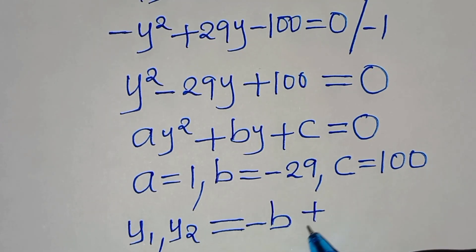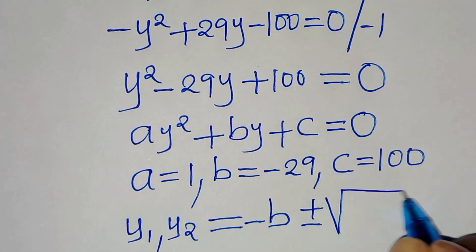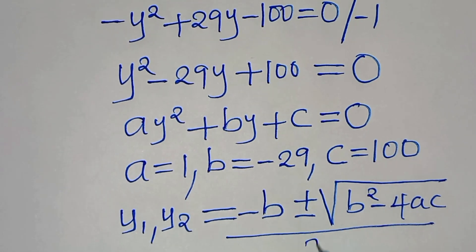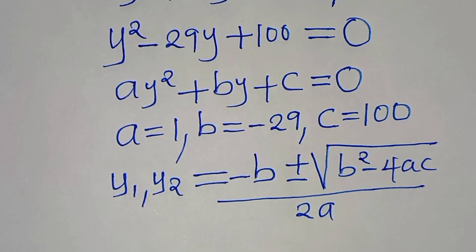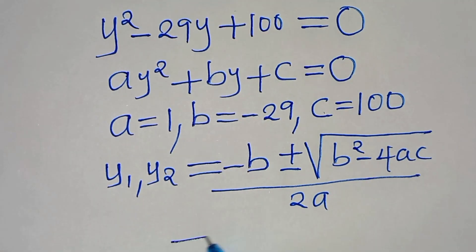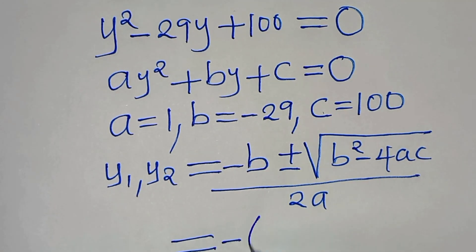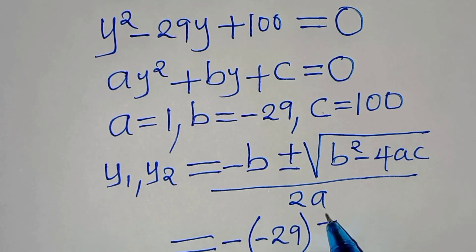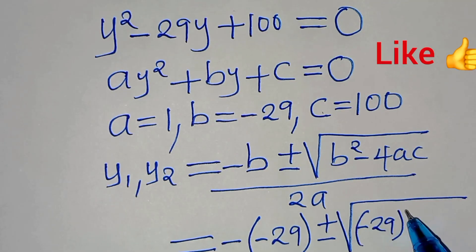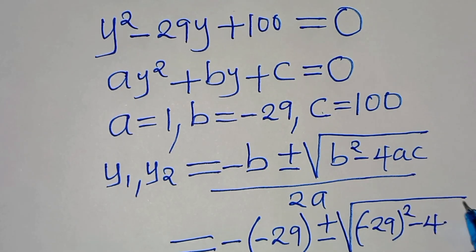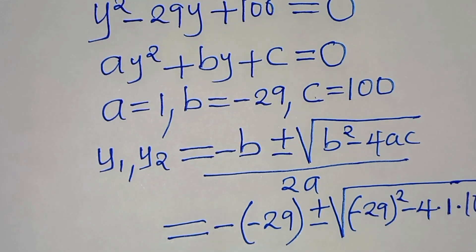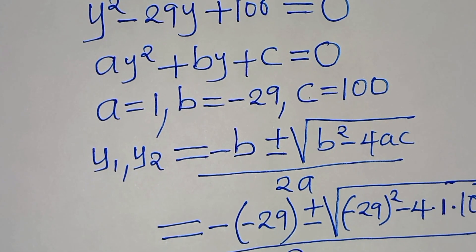The quadratic formula is: y equals minus b plus or minus the square root of (b squared minus 4ac), all divided by 2a. Substituting the values of a, b, and c: we have minus(minus 29) plus or minus the square root of (minus 29 squared minus 4 times 1 times 100), all divided by 2 times 1.